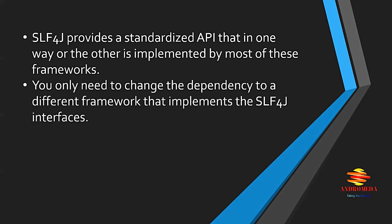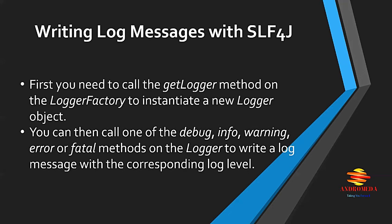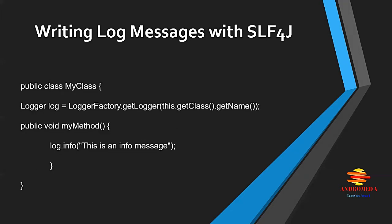Writing log messages with SLF4J is very easy. You first need to call the getLogger method on the LoggerFactory to instantiate a new logger object. You can then call one of the debug, info, warning, error, or fatal methods on the logger to write a log message with the corresponding log level. You can see in the example below how to instantiate and call that log object.